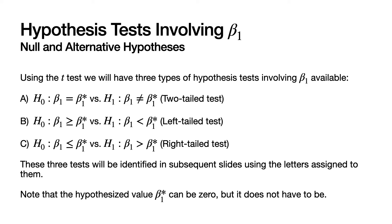Remember that when setting up hypothesis tests, you put what you're wanting to show in the alternative. So if the purpose is to show that the slope coefficient is different than some value, that goes in the alternative as beta_1 ≠ that value — a two-tailed test. If the goal is to show beta_1 is less than a value, use a left-tailed test. If the goal is to show beta_1 is greater than some value, use a right-tailed test. These three tests are labeled A, B, and C.